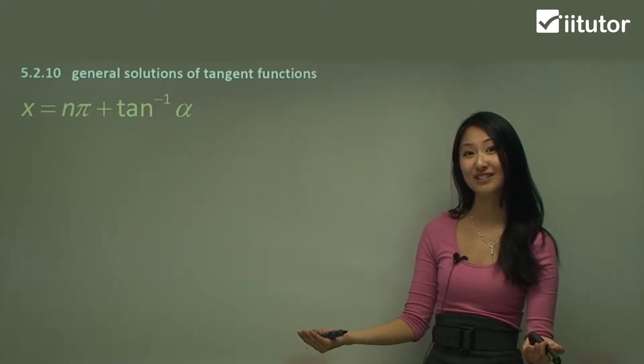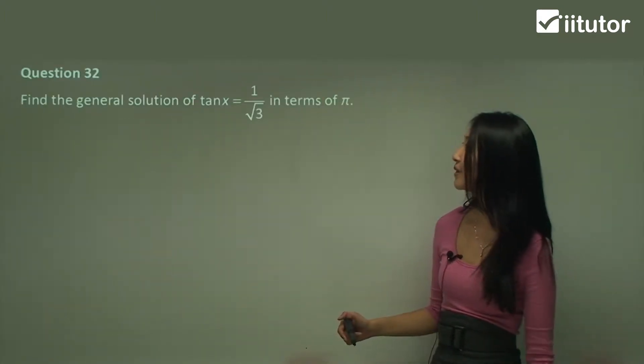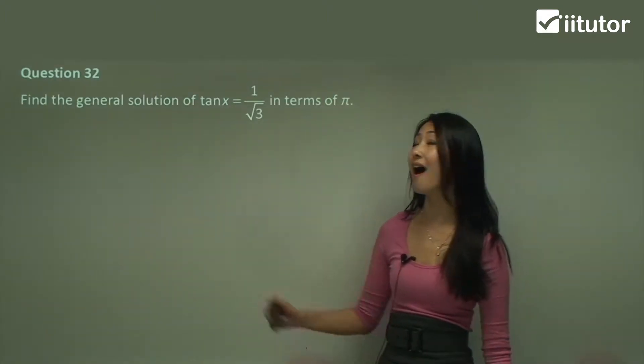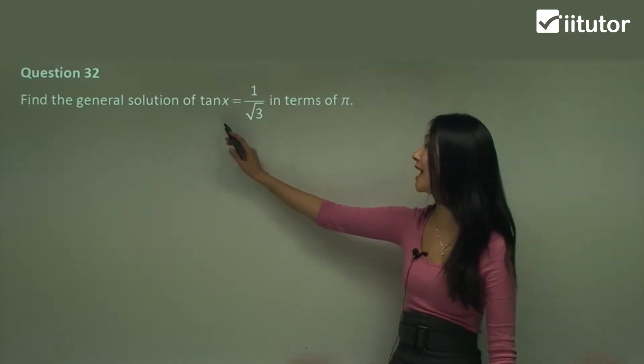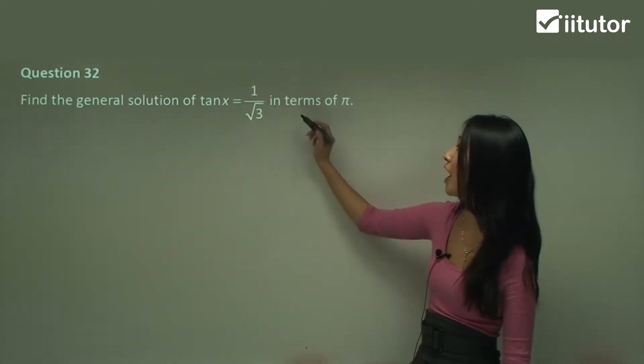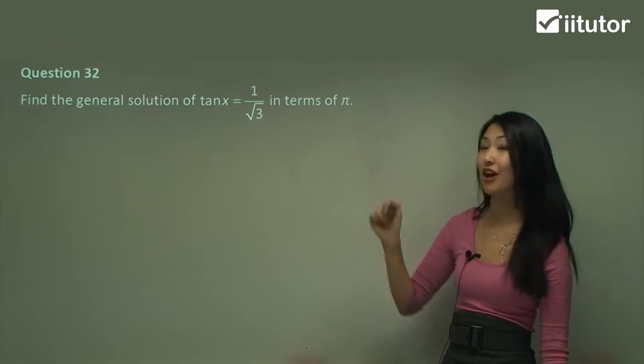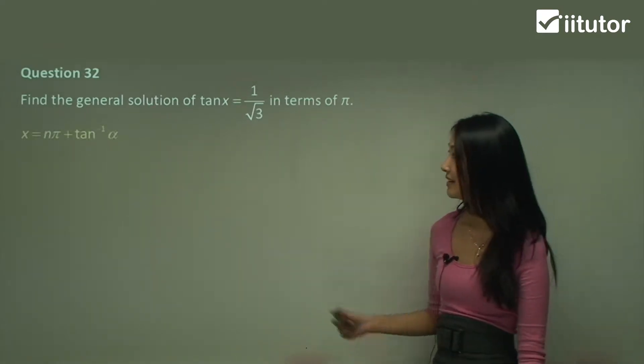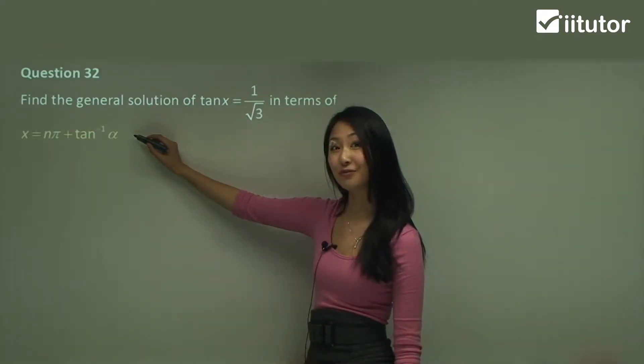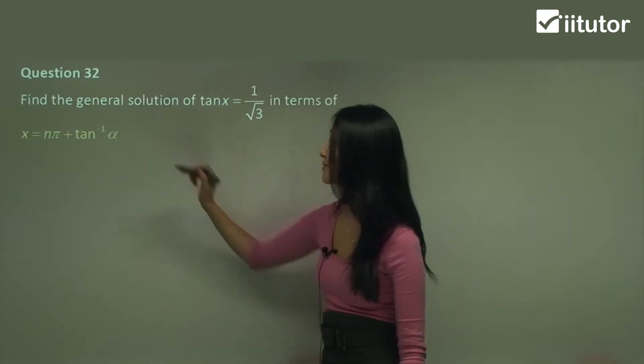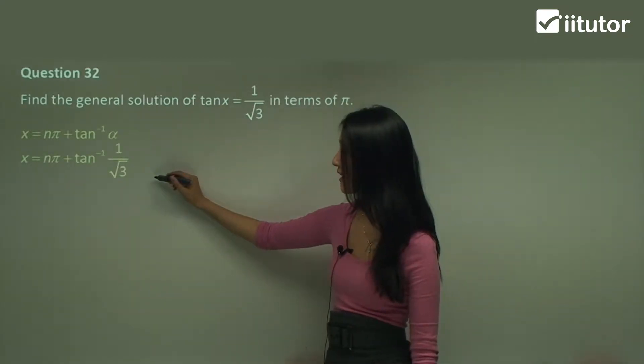Let's use it in some questions together now. Question 32, we want to find the general solution of tangent x equals one on square root three in terms of pi. So this is our general formula here. Let's substitute the alpha for one on square root three.